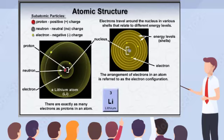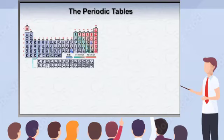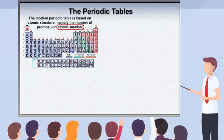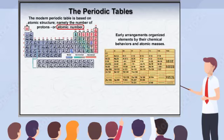This allows both the number of protons and the number of electrons to be determined simply by looking at the position of an element on the periodic table. Though today's periodic table arranges elements by the number of protons, the first periodic tables were based primarily on the chemical behavior of the elements known at the time, and also took into account the atomic masses of the elements.